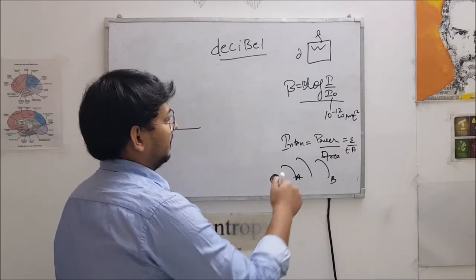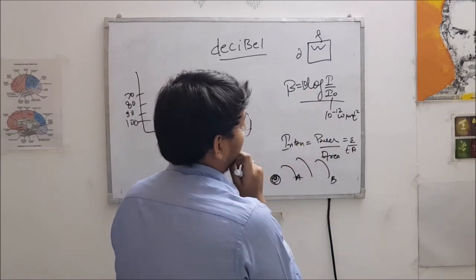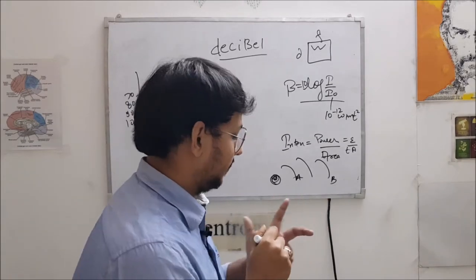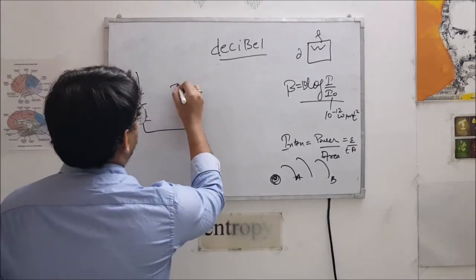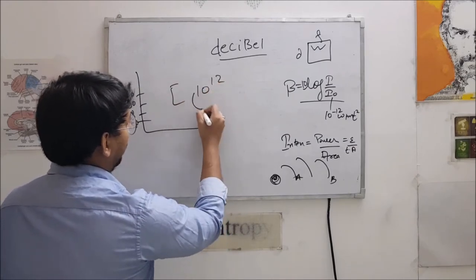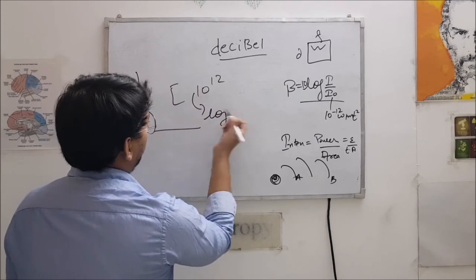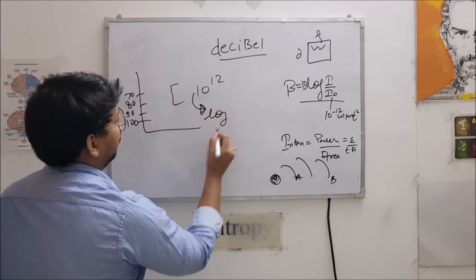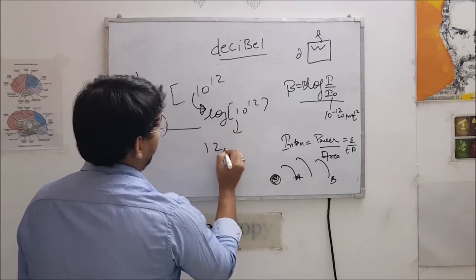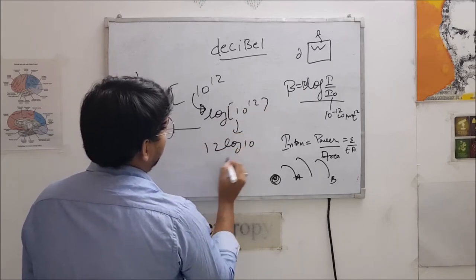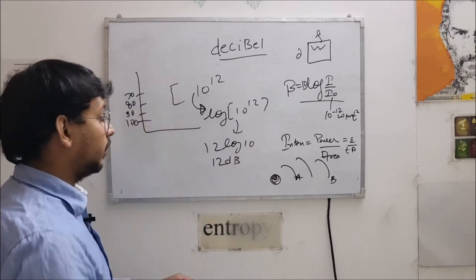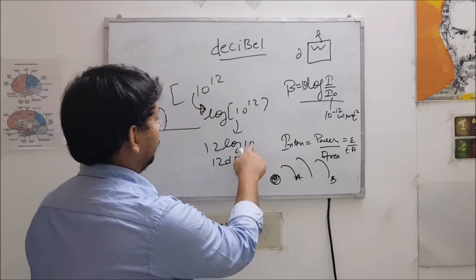So basically, this log helps us in shortening the value. I hope you have a little bit knowledge about log. Say we have 10 to the power 12. So if we take its log, log according to formula, log we take 10 to the power 12, so it comes out to be 12 log 10, which is log base 10 is 12. So basically it is 12, right? Log of 10 is 1.